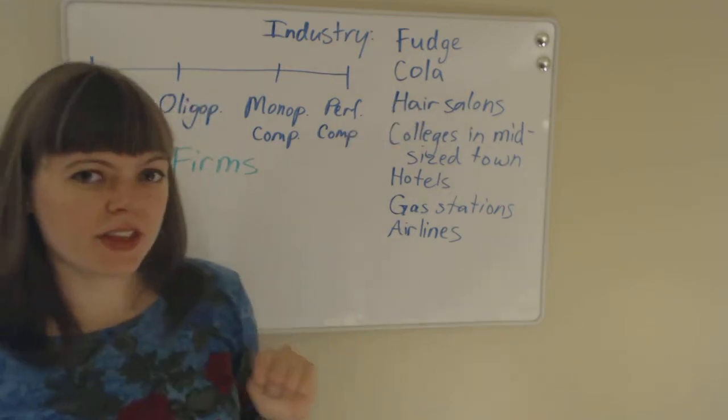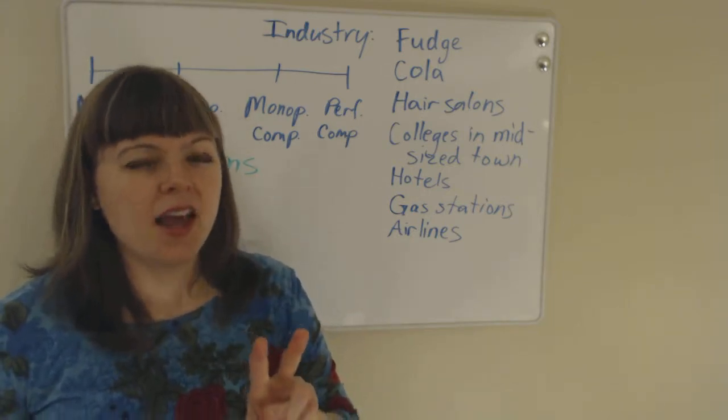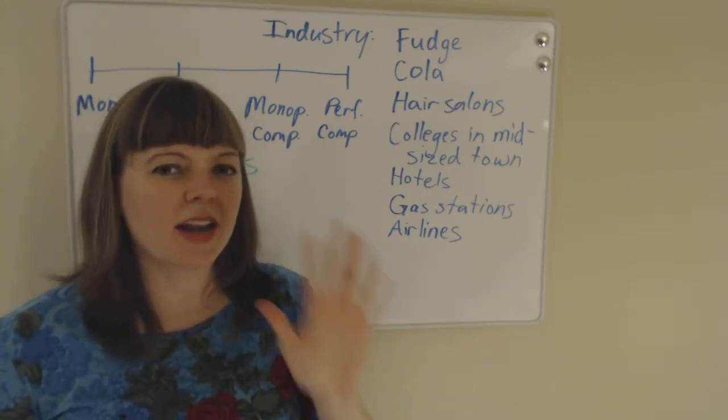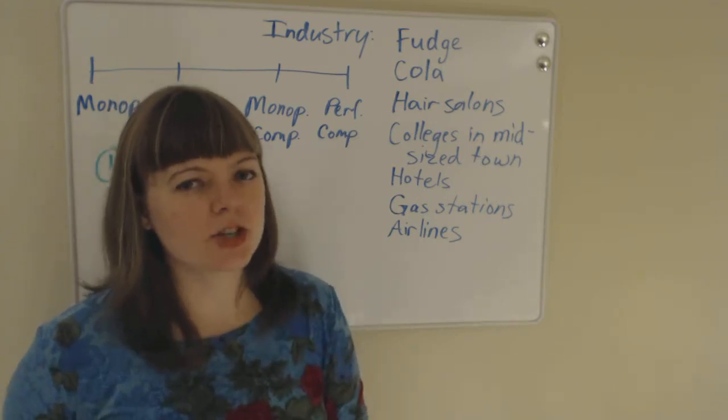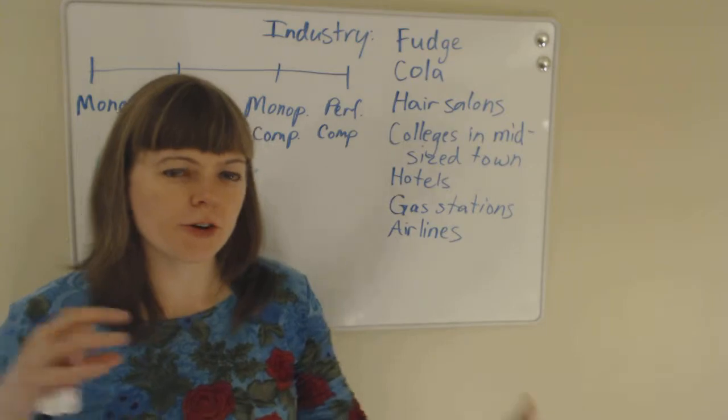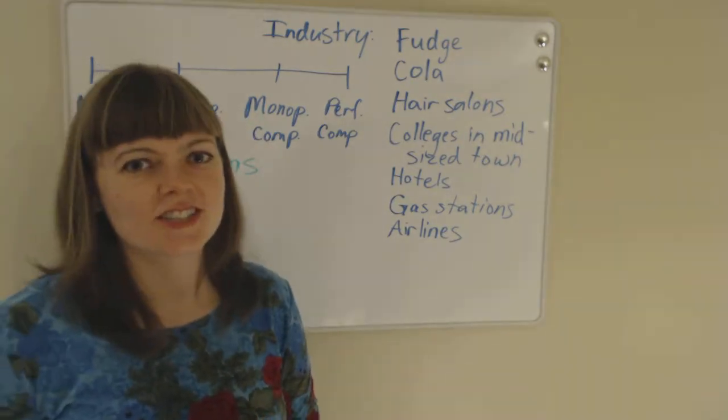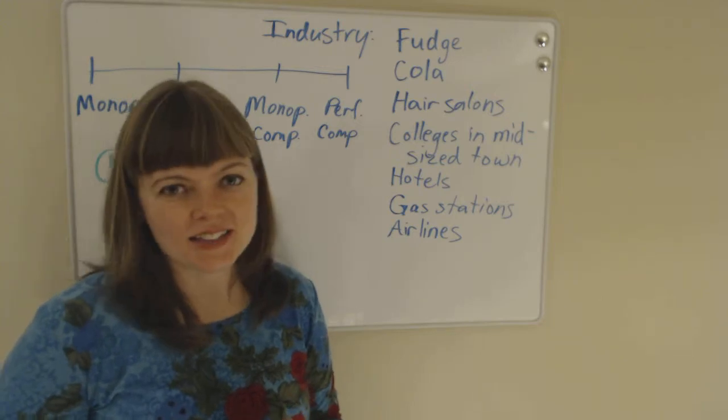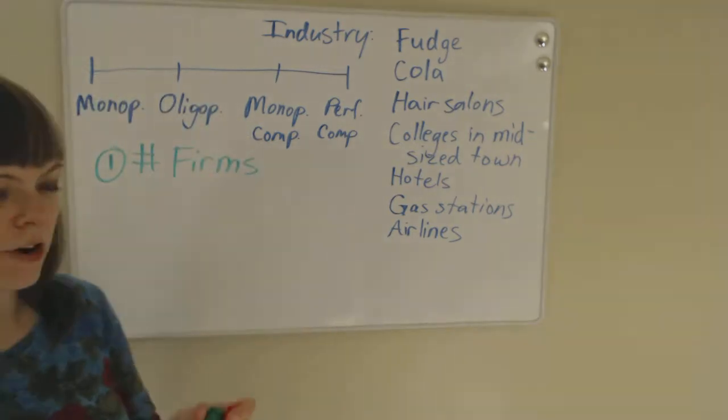Cola. So if we think about the cola industry, immediately we think Coke and Pepsi. And anytime in an industry you can name the top firms on a single hand, or maybe even two hands, if you can name those firms, and if those firms seem to be strategically watching each other's decisions and advertising against one another, there's a good chance it might be an oligopoly.